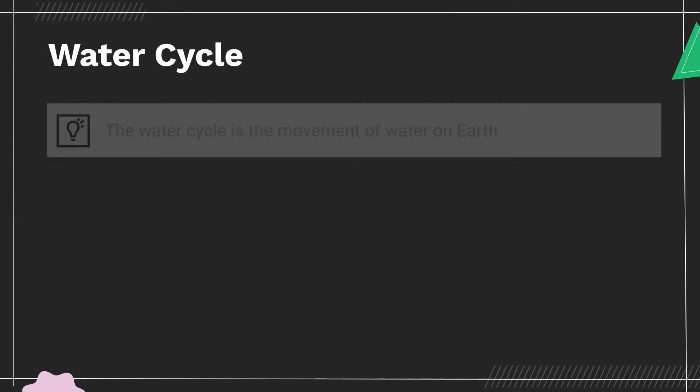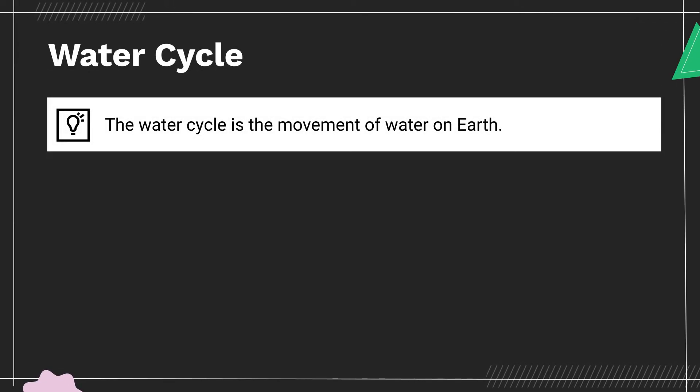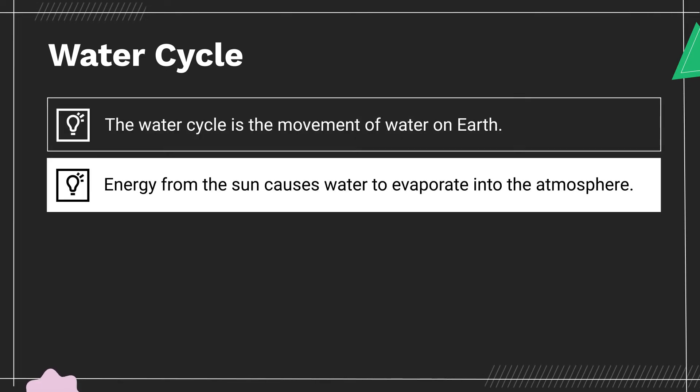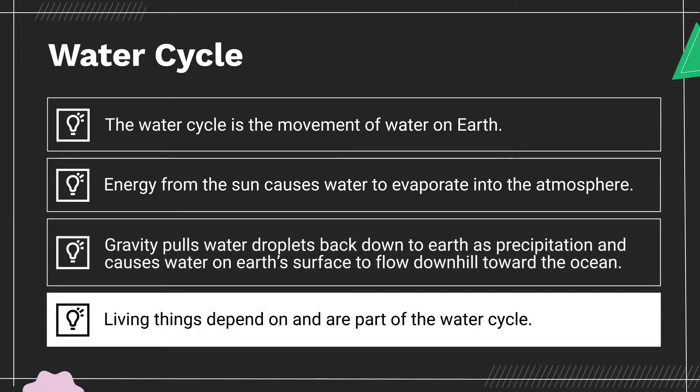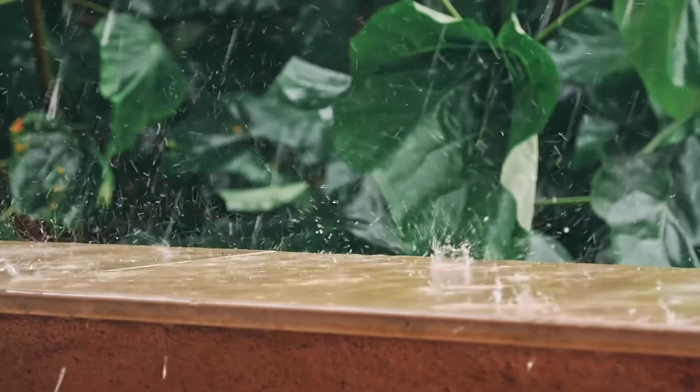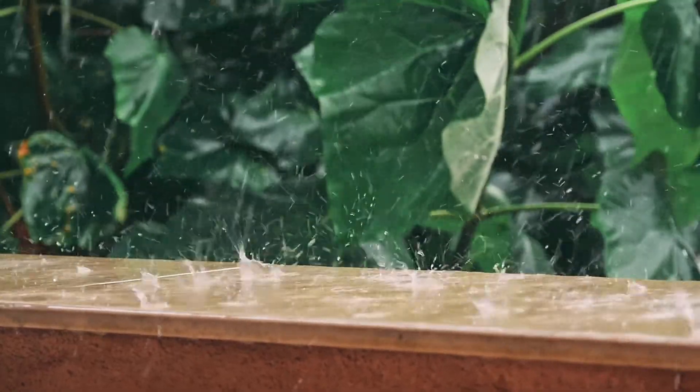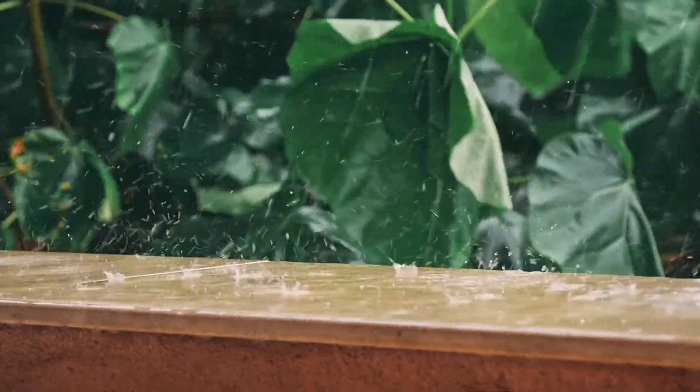Here are the important takeaways about the water cycle. The water cycle is the movement of water on Earth. Energy from the sun causes water to evaporate into the atmosphere. Gravity pulls water droplets back down to Earth as precipitation and causes water on Earth's surface to flow downhill toward the ocean. Living things depend on and are part of the water cycle. This is a great start, but there's always more to illuminate. What questions do you still have about the water cycle?